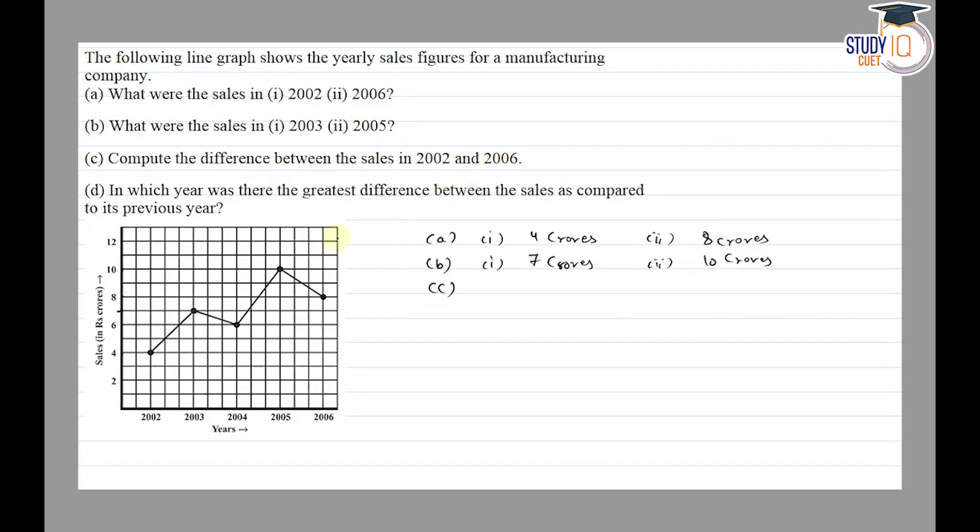Part C is compute the difference between the sales in 2002 and 2006. So in 2002 we have 4 crores and in 2006 we have 8 crores. The difference is 8 minus 4, which is equal to 4 crores.